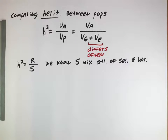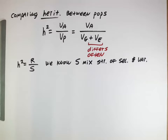This becomes important for contemporary society because there are lots of studies where people try to study, for example, the heritability of IQ. Those values should be taken with a big grain of salt if we start talking about how much of IQ is genetic versus environmental, whenever we study any population different from the one used to generate that heritability value.